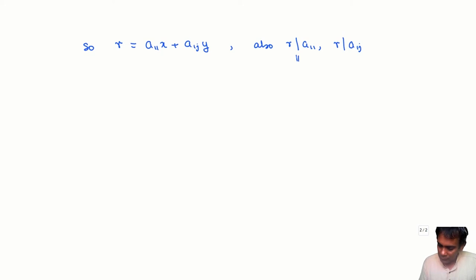Well, this means that I can write a_11 as q_11 times r, and this means that I can write a_1j as q_1j times r. So what I get is 1 equals q_11 times x plus q_1j times y, just taking this first equation and dividing both sides by r.